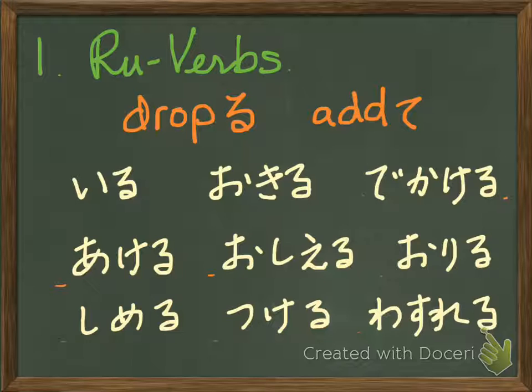Let's make te-form from these verbs. Iru — drop ru and add te. So ite is the te-form of iru.